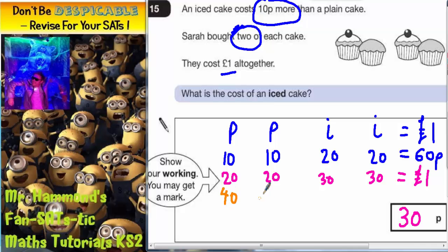If you just said 40p here, then the iced cakes would have been 10p more, which would have been 50p. Well, that would have been too much.